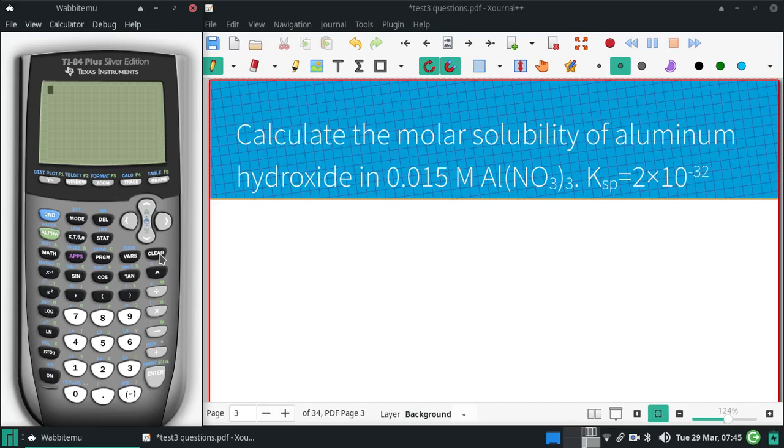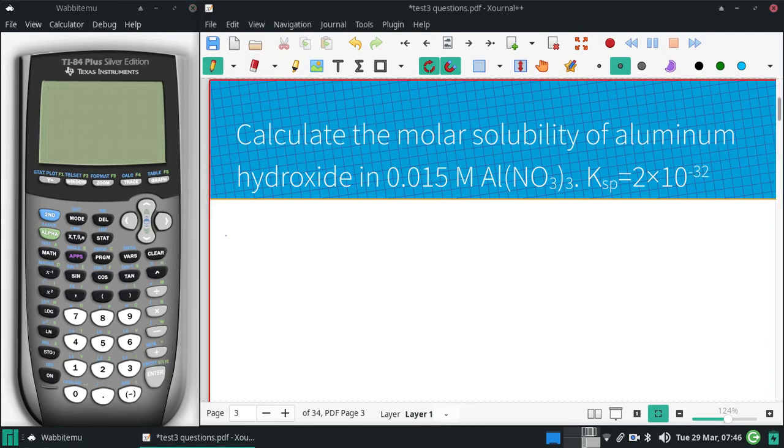Calculate the molar solubility of aluminum hydroxide in 0.015 molar aluminum nitrate. I'll give you the Ksp of aluminum hydroxide.